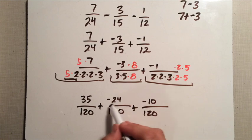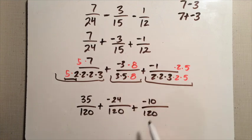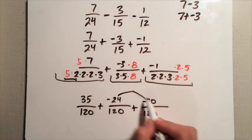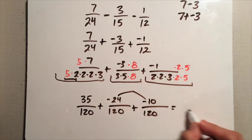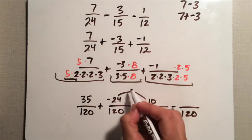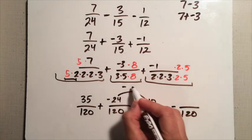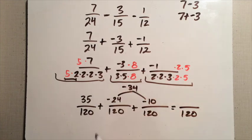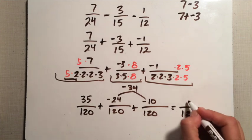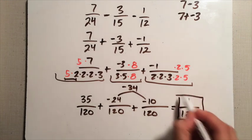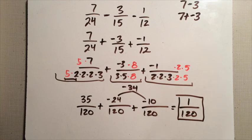I like to combine all my negatives and then add the positives. All the same size pieces, so my denominator is one hundred twenty. Negative twenty-four plus negative ten is negative thirty-four. Negative thirty-four plus positive thirty-five is just positive one. So my answer is one over one hundred twenty.